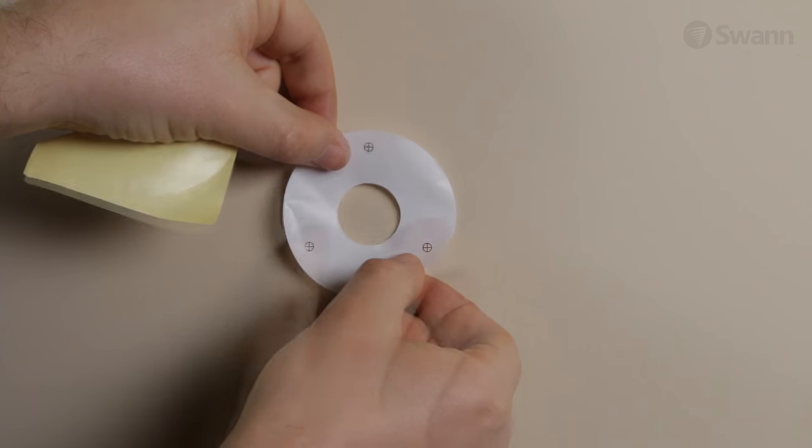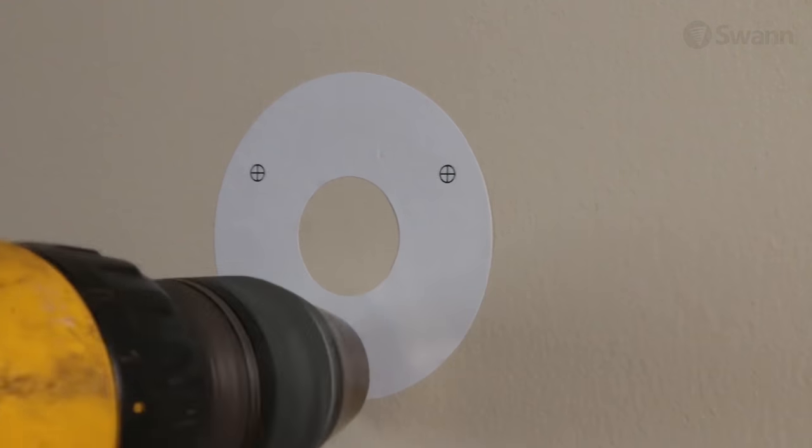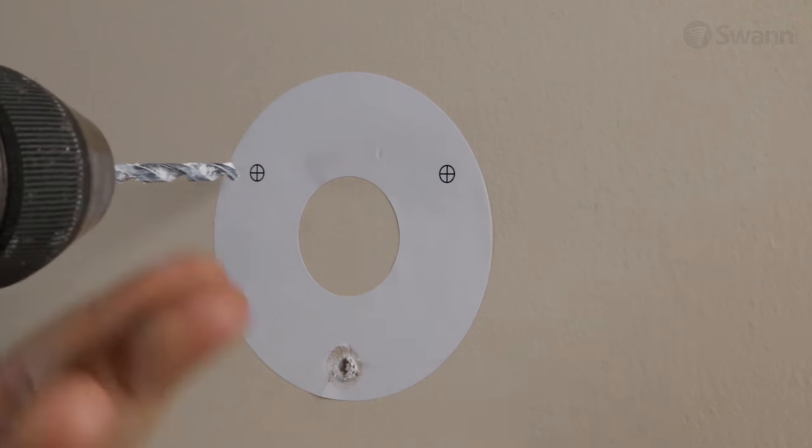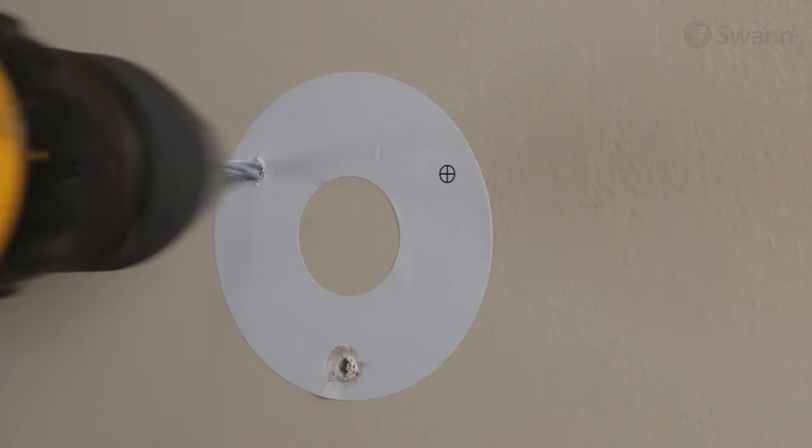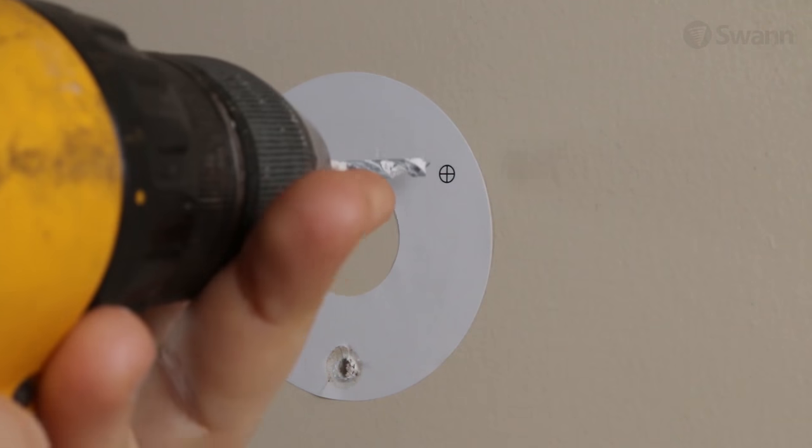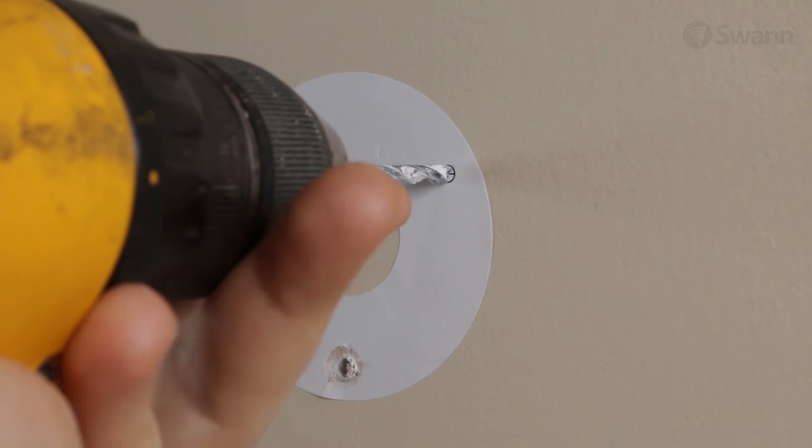Begin by sticking the template where you wish to install a camera. If you are mounting to drywall, brick, or masonry, use a 3/16 inch drill bit to drill three holes in the template. If you are mounting to wood or a stud, use a smaller drill bit.